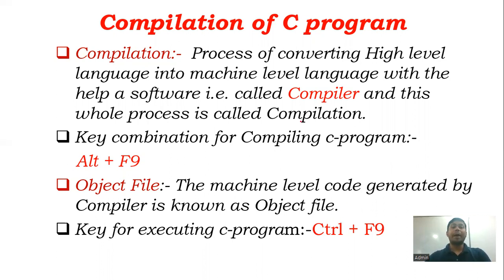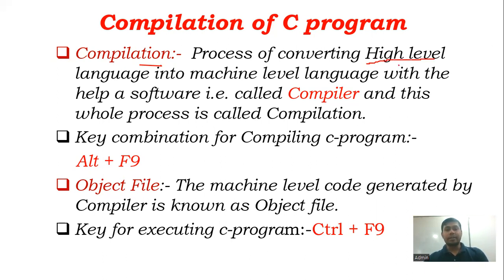The first step is compilation. What is compilation? Basically, whatever code you are writing is your source code, and that is in a high-level language. When you compile it, the compiler generates machine-level language code, which is called machine code. This process is called compilation. The software that is used for this compilation purpose is called a compiler.